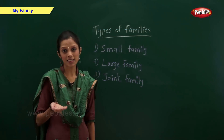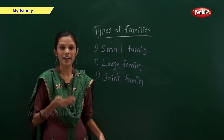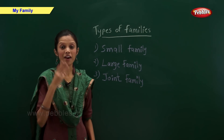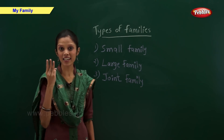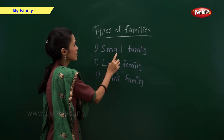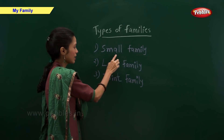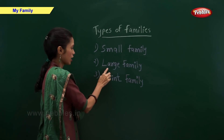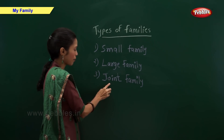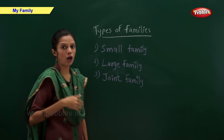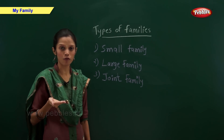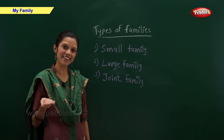Some families are big and some are small. There are mainly three types of families: small family, large family, and joint family. Now let us have a look at each of them in detail.